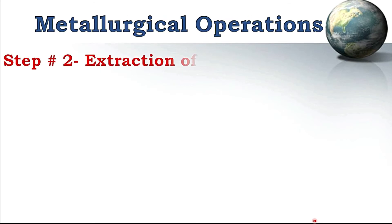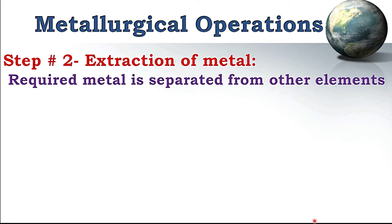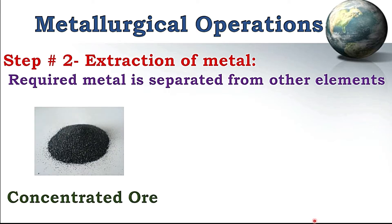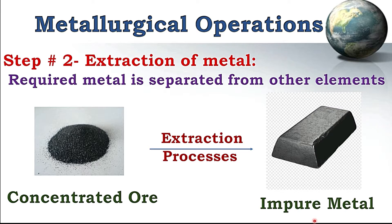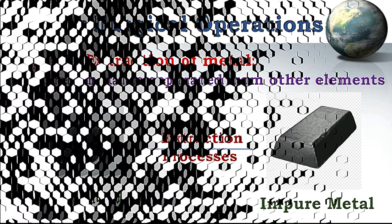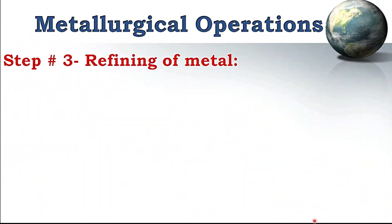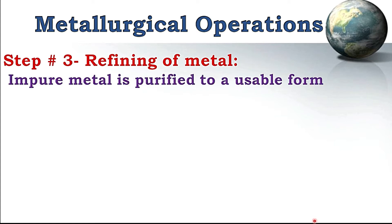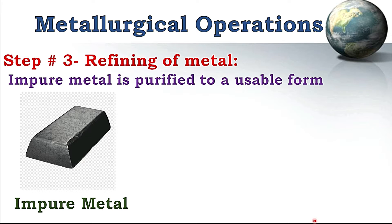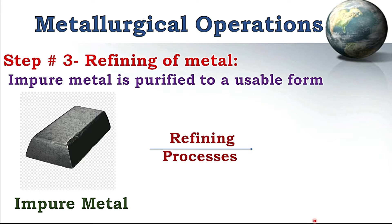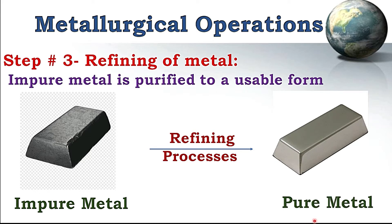After concentration of ore, the second step is extraction of metal, where the required metal is separated from other elements. We start with concentrated ore and through different extraction processes it is converted into an isolated metal form — this metal is impure but has been separated from other elements. The third step is refining of that impure metal, where it is purified to a pure, usable form by applying different refining processes.